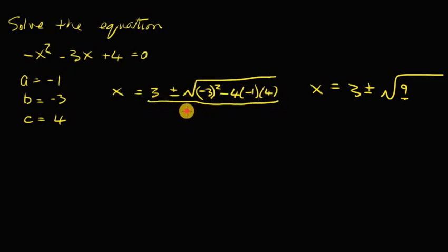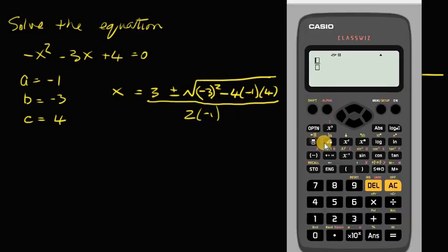All over 2a, which is 2 times a is minus 1. So let's plug that into our calculator. The first thing I would do is I would hit that button there. I'm going to go 3, I'm going to do plus first. The square root of b squared, I'm going to go straight to 9. Instead of doing this, minus 3 close bracket to the power of 2.